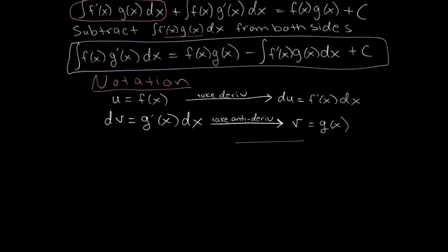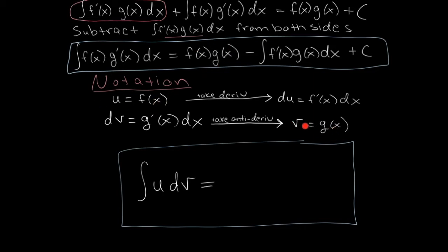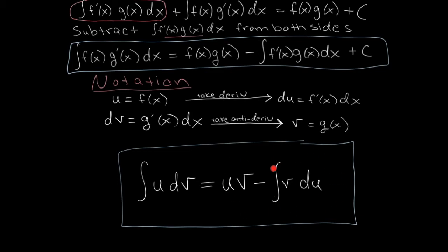So now here's our integration by parts formula in the format we usually use. The left side is the antiderivative of u times dv. This equals u times v minus the integral of v times du. Notice there's an antiderivative symbol on both sides of this equation — you're given the integral on the left, you do integration by parts, and your new formula is on the right. Hopefully the integral of v times du will be easier than the original. That's the whole point of the integration by parts formula.